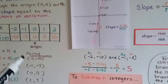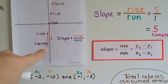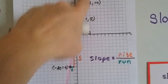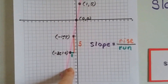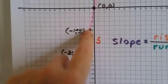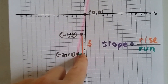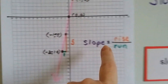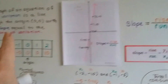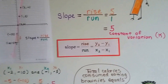Once we plot these coordinates and draw the line, remember slope equals rise over run. It's rising to the right, so we know it's a positive slope. The rise is 5 and the run is 1, so the slope equals 5. And the slope is equal to the constant of variation, so we confirm the constant of variation is 5.